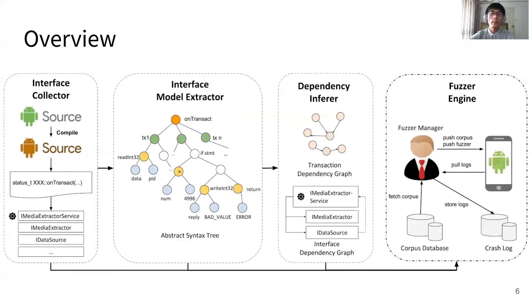To solve the above challenges, we propose a generation-based fuzzing solution called FANCE. FANCE can be divided into four modules: interface collector, interface model extractor, dependency inferrer, and fuzzing engine.